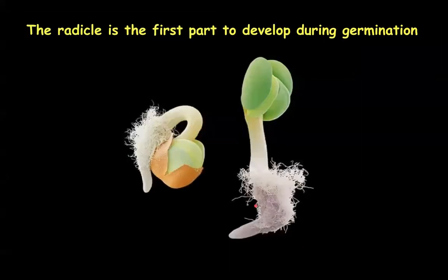When germination occurs, the first structure to emerge from the seed is the radicle, followed a little later by the plumule. The radicle emerges first because it needs to absorb water and minerals and fix the growing seedling into the soil.